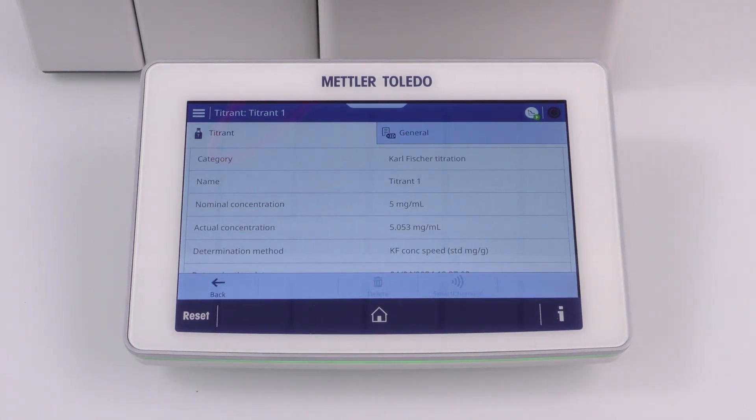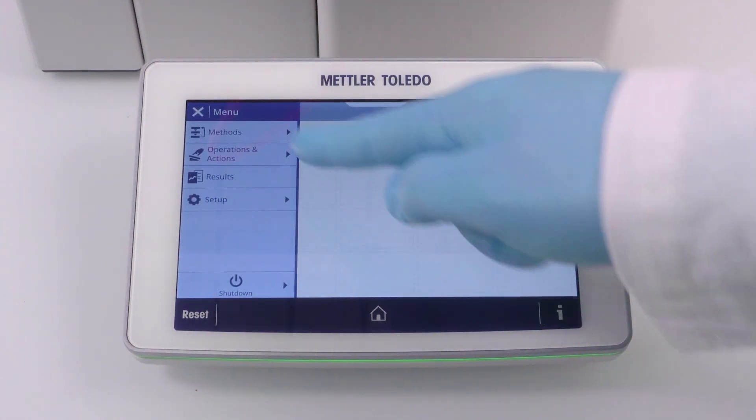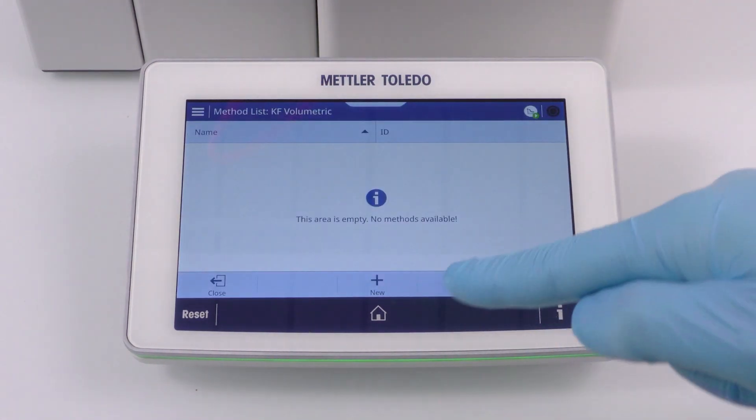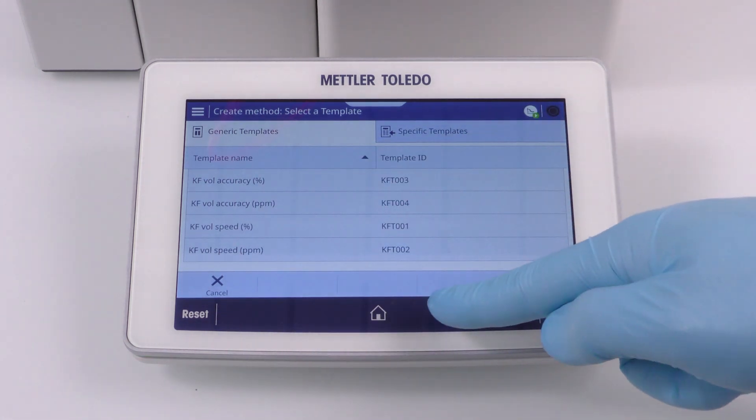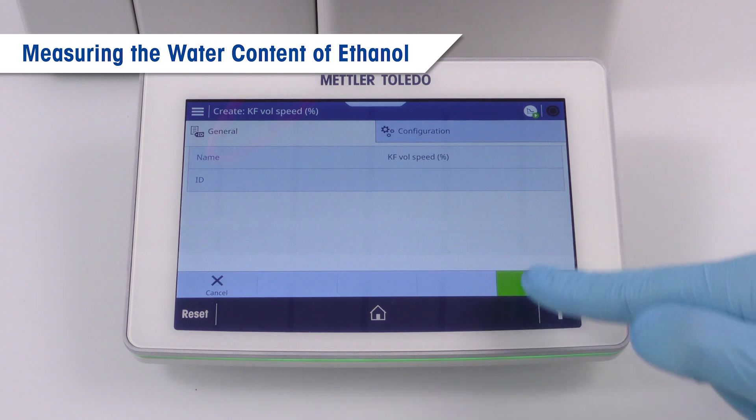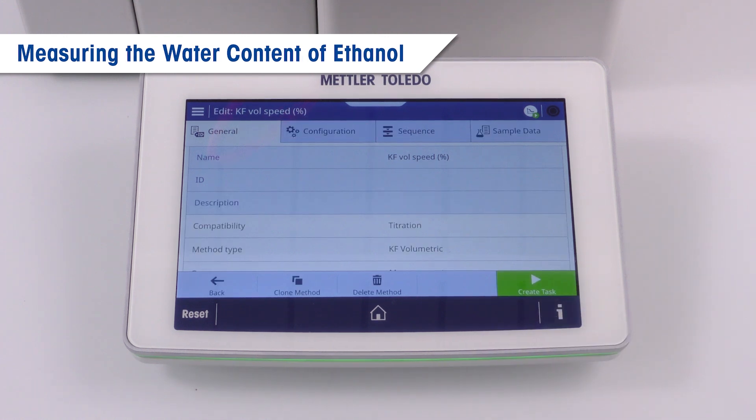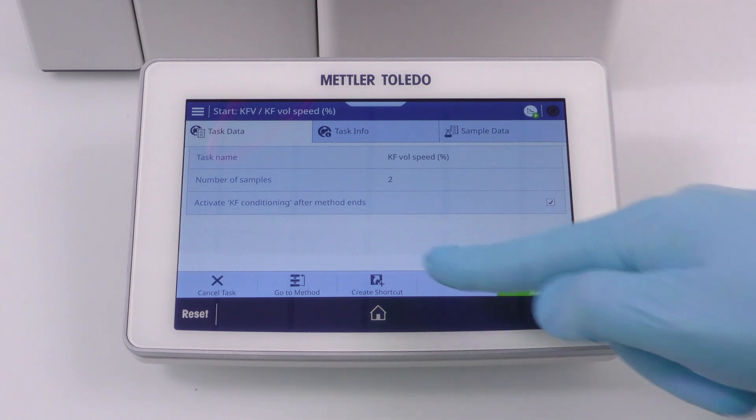The next time you use this titrant resource for a titration, the corrected actual concentration is used for calculating the result. Having the actual concentration of the titrant determined, we are now ready to accurately measure the water content of a real sample. In our example, I want to know the water content of industrial alcohol. A very easy sample. Similar as before, we create a method and shortcut. However, this time we are using a template of type KF volumetric.